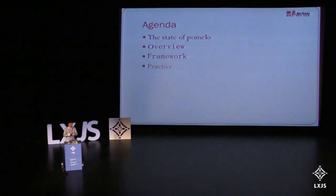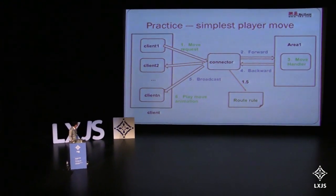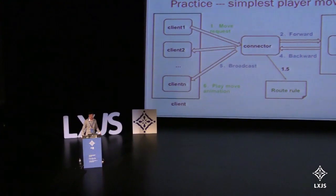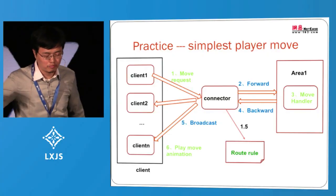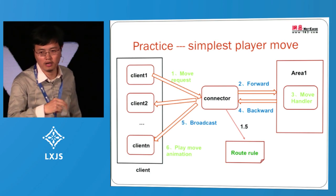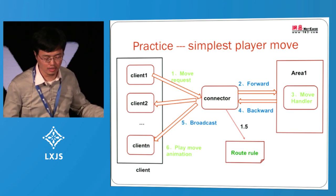Let's jump to the last part: practice. I'll show you a simple use case called PlayerMove. The workflow is: first, the client plays some animation and sends a move request to the server. When the connector receives the move request, it routes the message to the specific area server. The area server is where the real business logic is done — in the move handler. When the logic is done, it pushes the message back to the connector, and the connector broadcasts to all clients who can see me move. All other clients then play the animation.